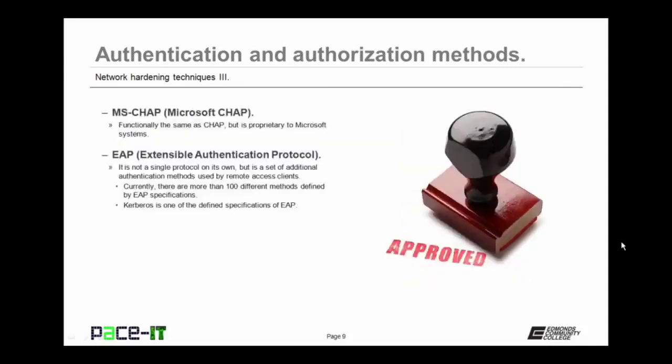There's also MSCHAP — functionally the same as Challenge Handshake Authentication Protocol, but it is Microsoft's proprietary implementation. You might also implement one of the forms of Extensible Authentication Protocol, or EAP. It's not a single protocol on its own, but a set of additional authentication methods used by remote access clients. Currently, there are more than 100 different methods defined by the EAP specifications.